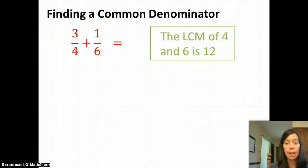So the least common multiple for 4 and 6 is 12. 4 goes into 12, and 6 goes into 12. There are other numbers that they both go into, like 24, but 12 is the smallest common multiple, the least common multiple, so that's what we're going to use.